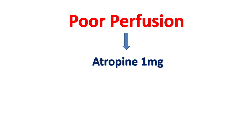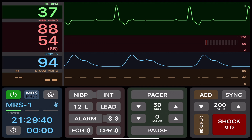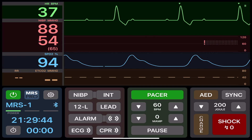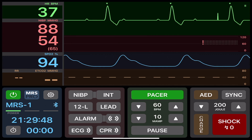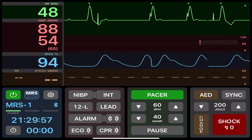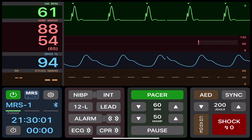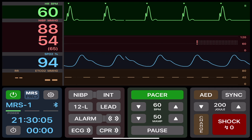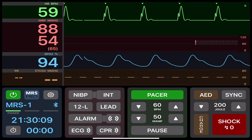If atropine is ineffective, consider either pacing, dopamine, or an epinephrine infusion. The American Heart Association gives you the option to select which one you would like to use. In general, it is much quicker to start with pacing and then, as you are busy setting up pacing, start preparing your other medications. Transcutaneous pacing or TCP uses electrodes on the chest to deliver electrical impulses that override the normal pacemaker functions of the heart. It is extremely important to know how to set up TCP with the device you have available in your organization.